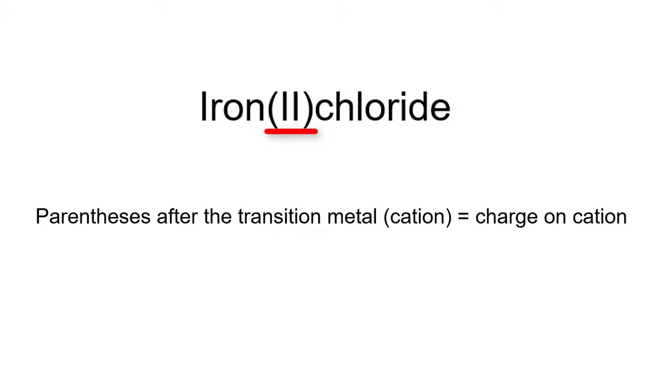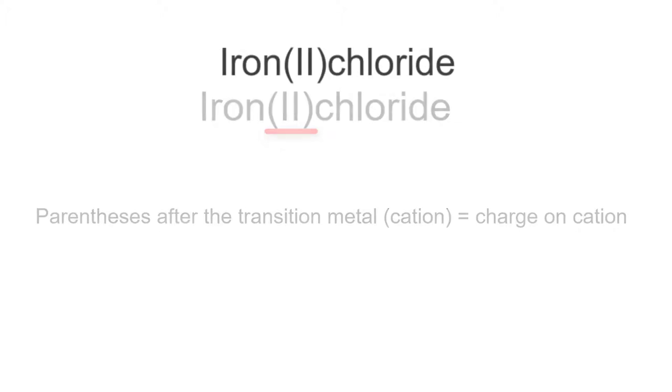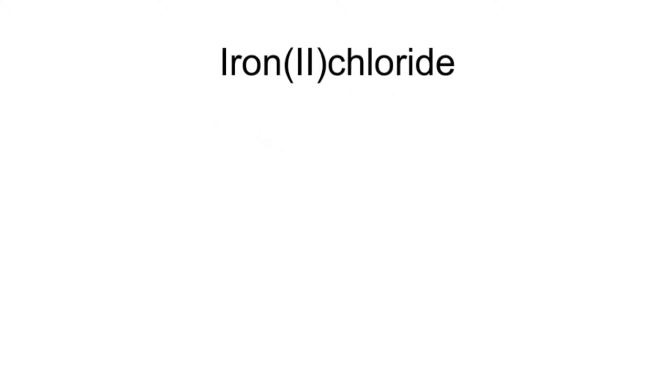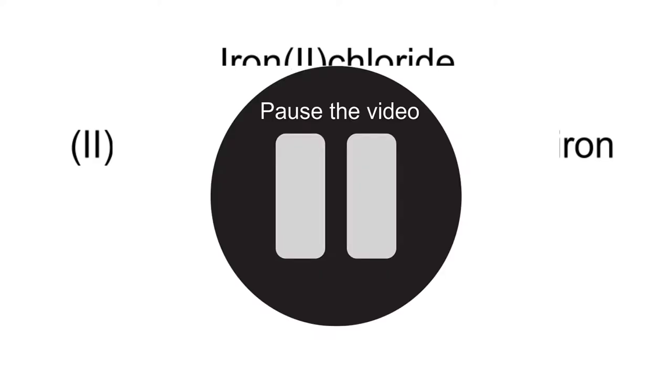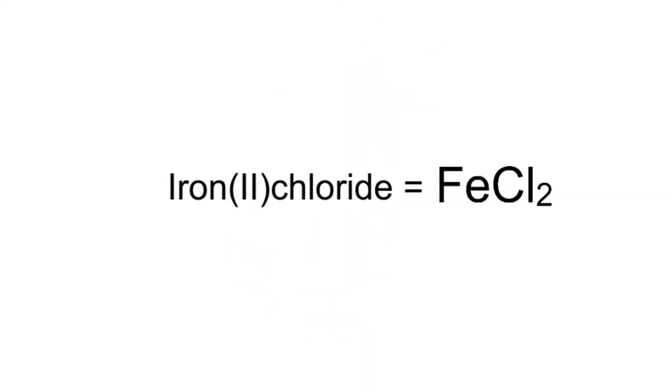We will start with the name iron(II) chloride. The 2 means that the iron has a positive 2 charge. As for the chlorine, since it's a halogen, it has a minus 1 charge. Based off of that information, please pause the video and try to write the chemical formula yourself. Did you get FeCl2? If not, let's use our crossover method.